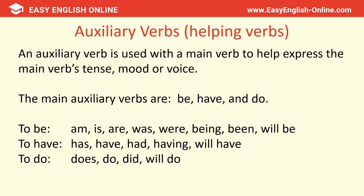Let's look at auxiliary verbs — these are helping verbs. An auxiliary verb is used with a main verb to help express the main verb's tense, mood, or voice. The main auxiliary verbs are be, have, and do. To be: am, is, are, was, were, being, been, will be. To have: has, have, had, having, will have. To do: does, do, did, will do. For example: 'That piece of chicken was eaten by me,' 'I have eaten sushi many times before,' 'Did you like the music?'